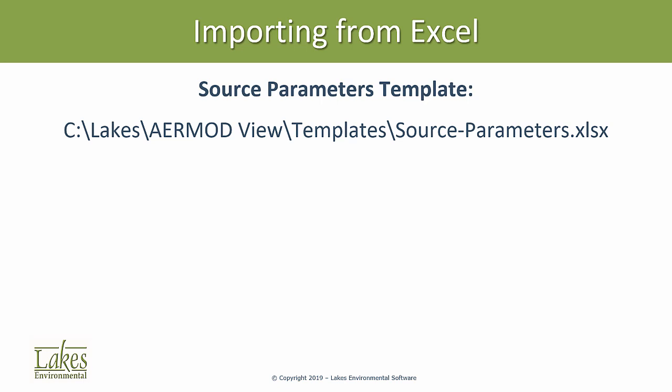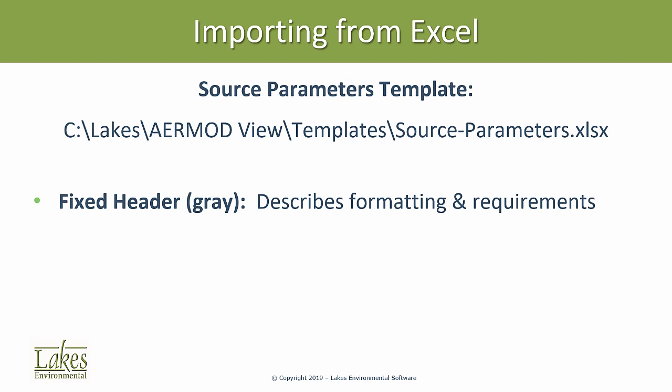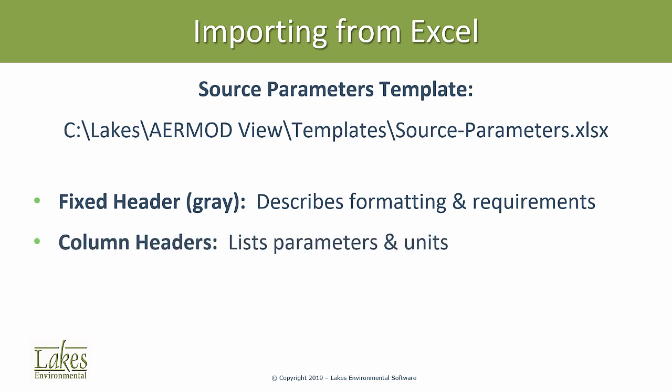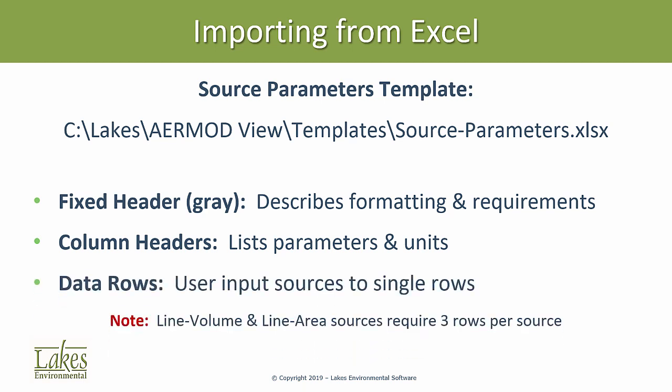The sheet contains three elements. The fixed header in gray describes how data should be formatted as well as which columns are required for each source type. Column headers in yellow list the available parameters in the expected units, and the data rows in white are where users input data with one source per row. The exceptions to the one source per row rule are line volumes and line areas, which require three rows per source.